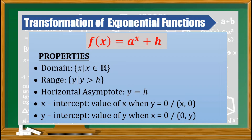As for the range, it is the set of y such that y is greater than h. All we need to do is take out the h value. The range can also be less than h if there is a negative sign beside a. For the horizontal asymptote, it is y equals h. To find the x-intercept, we need the value of x when y is zero. And for the y-intercept, it is the value of y when x is zero.